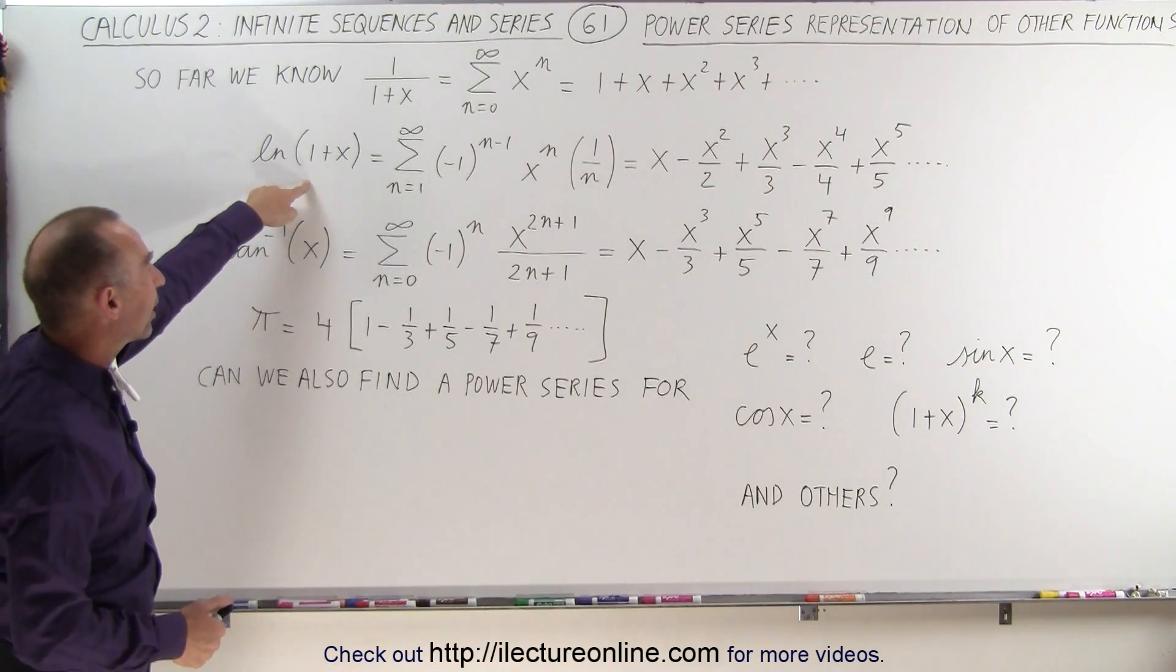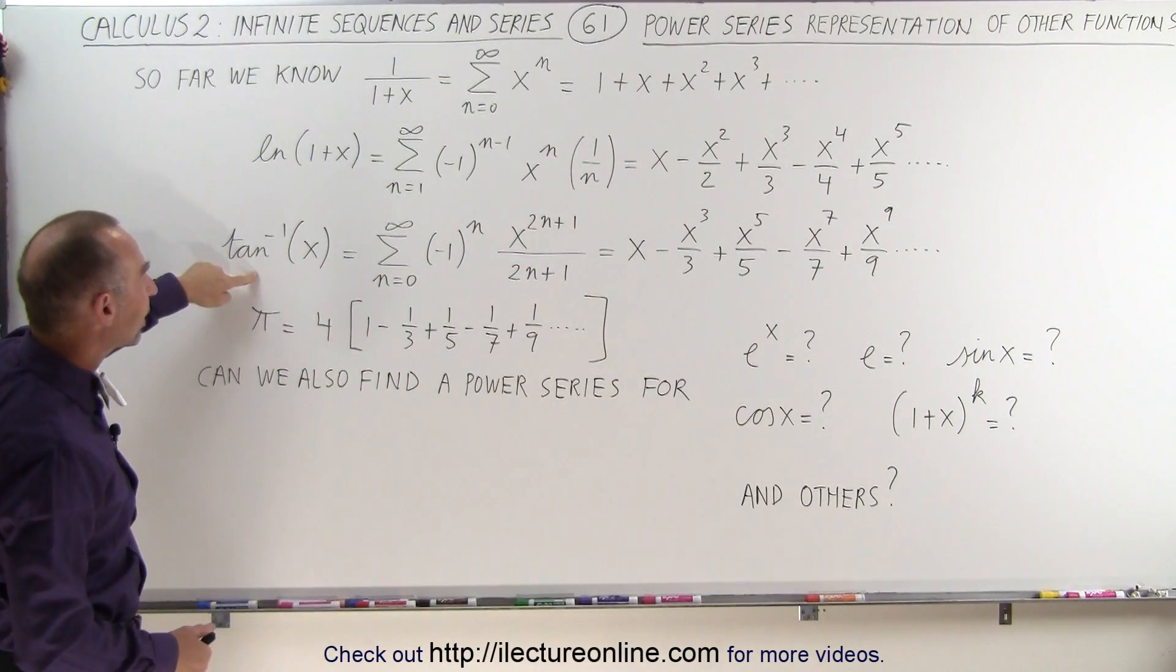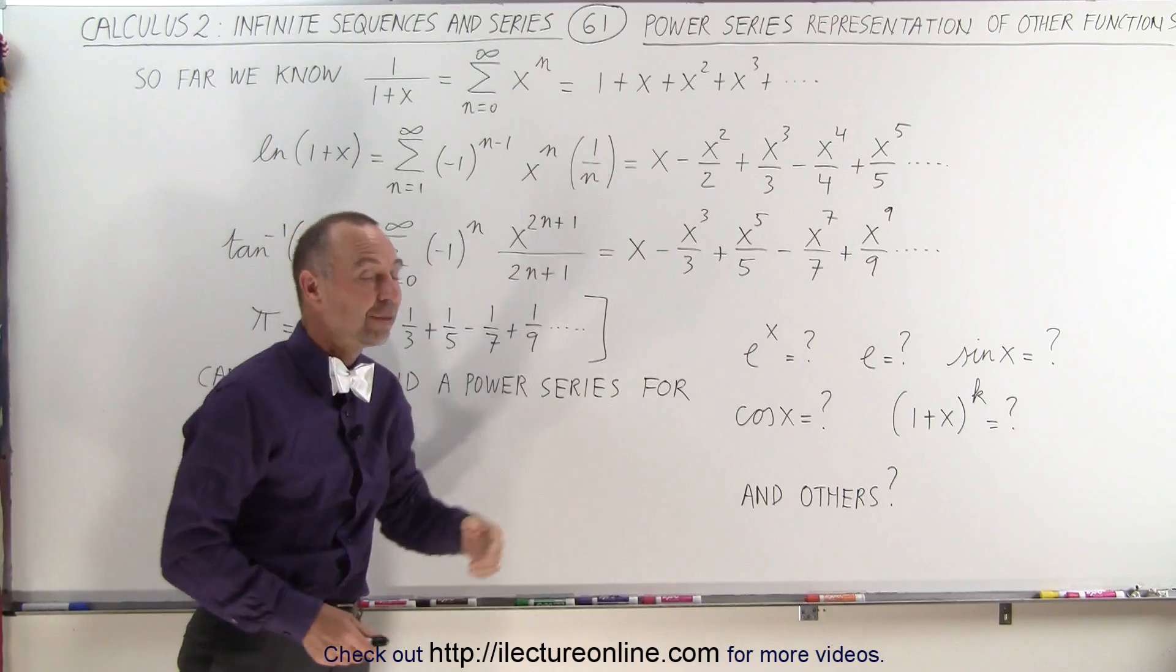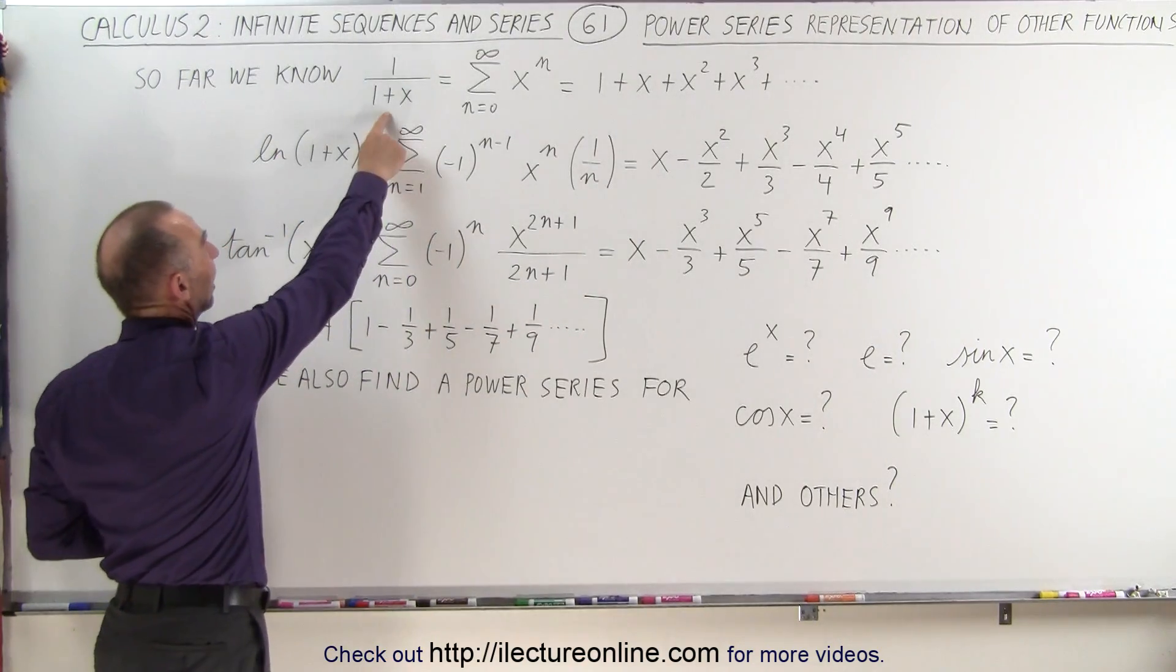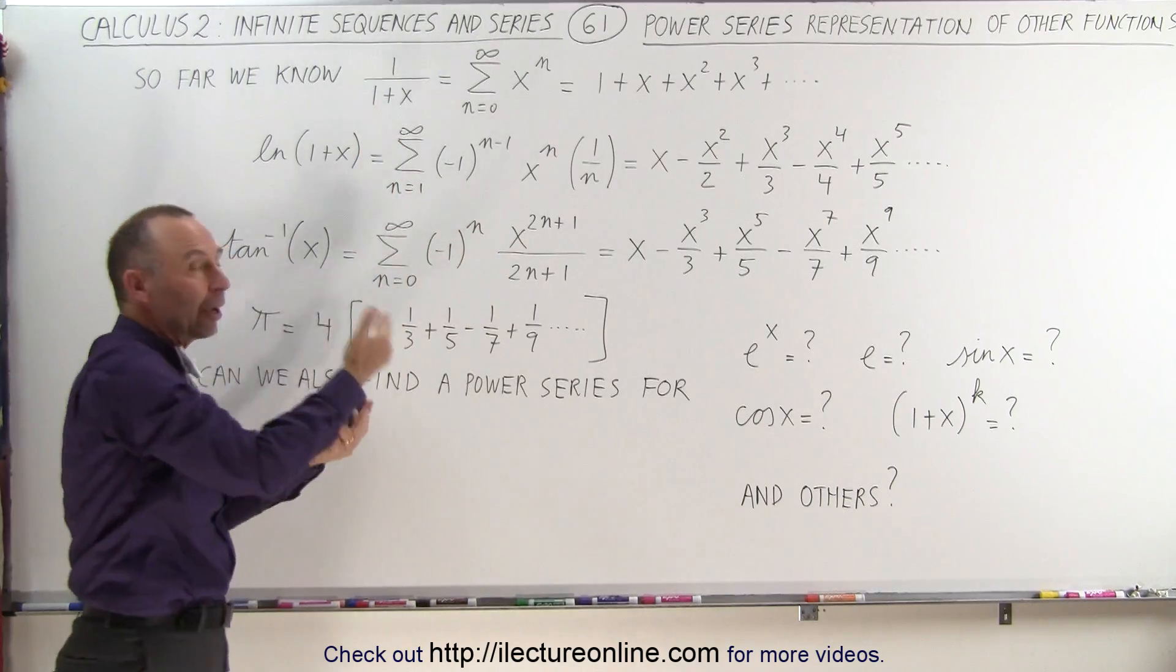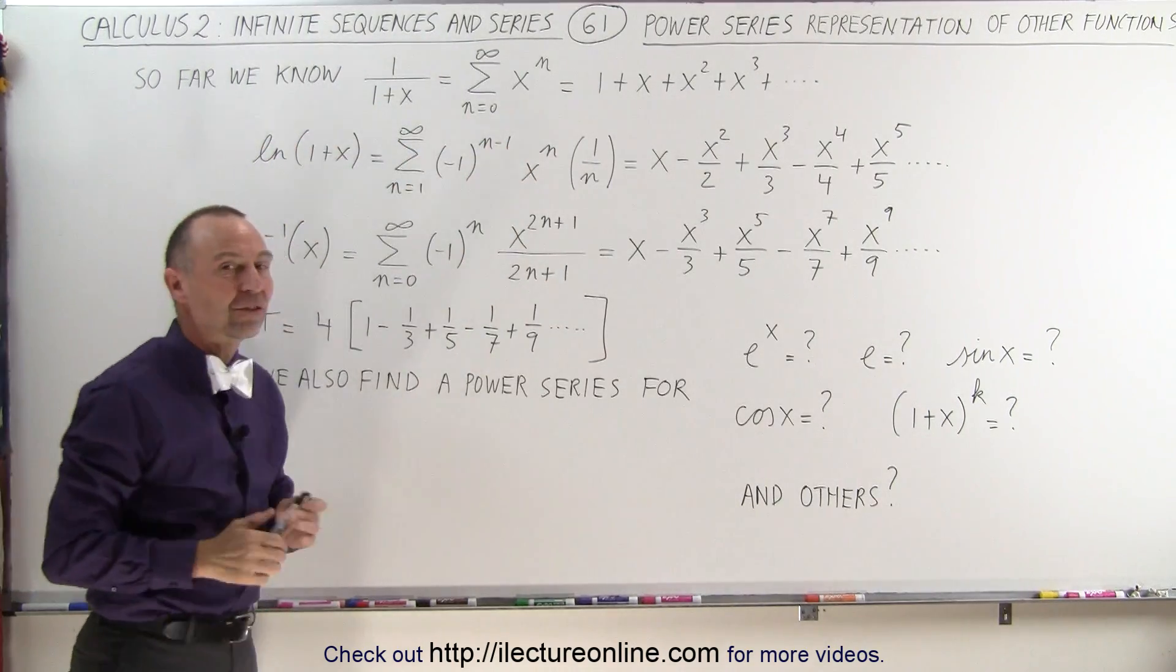We've taken the natural log of 1 plus x and written it as a power series. We've taken the arctangent of x and written it as a power series. And then we've used other techniques such as taking this as an initial step and then taking other functions and making them look like that to be able to write out an infinite series for those.